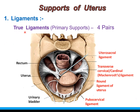The four pairs of true ligaments act as primary supports of the uterus. From anterior to posterior they are: pubocervical ligaments, round ligaments of the uterus, transverse cervical ligaments (cardinal ligaments or Mackenrodt's ligaments), and posteriorly the uterosacral ligaments.